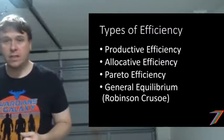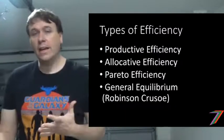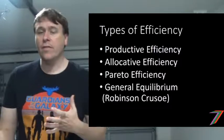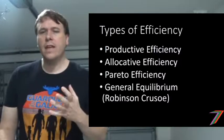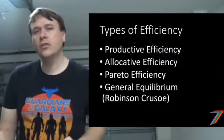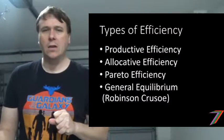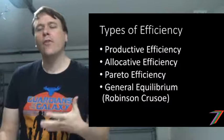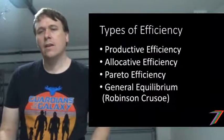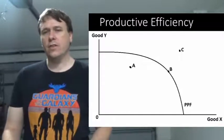There's several of them. There's productive efficiency, there's allocative efficiency, and there's Pareto efficiency. I'm also going to be looking at the end just a little bit on general equilibrium and how that also fits into efficiency as well. So that's basically four ways of looking at efficiency. Let's start off with productive efficiency.